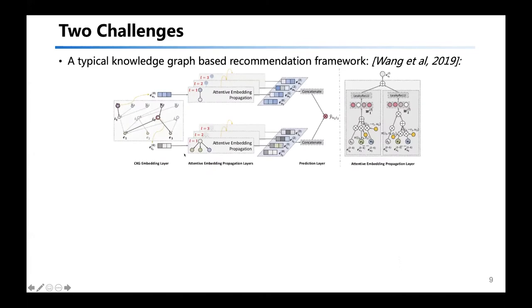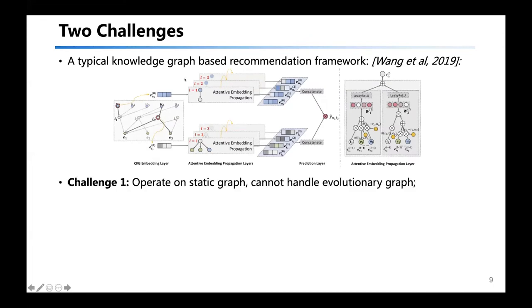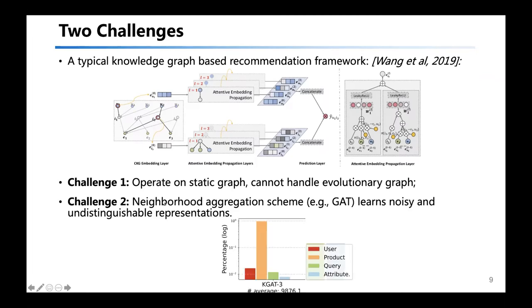The most relevant framework is KG Knowledge Graph Based Recommendation — specifically KGAT, the most famous KG-based recommendation framework. However, directly generalizing this line of frameworks on our setting faces two challenges. The first is that most frameworks operate on static graphs, whereas in our case the graph is highly evolving over time. The second challenge is caused by the neighborhood aggregation scheme commonly used in these frameworks: in our newly constructed graph, the type of entities is much more diverse and the graph is denser, so the neighborhood aggregation scheme can easily learn noisy and undistinguishable representations.